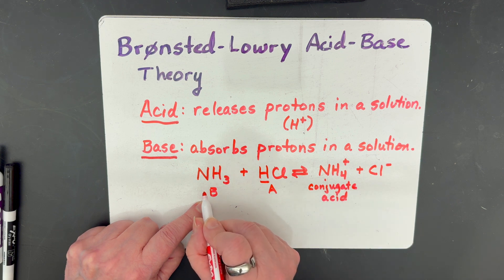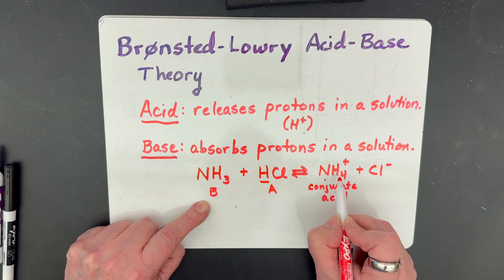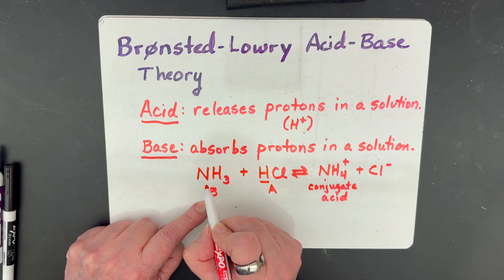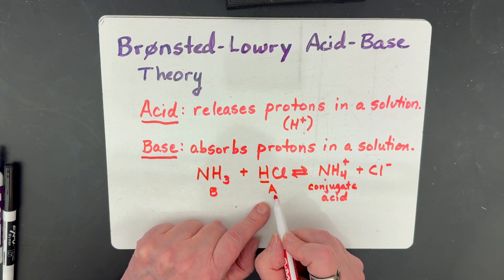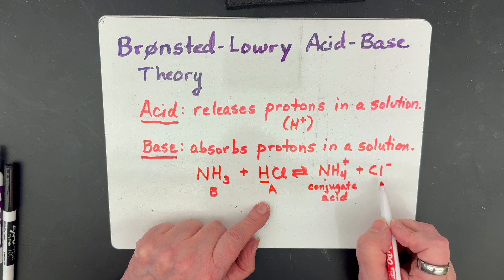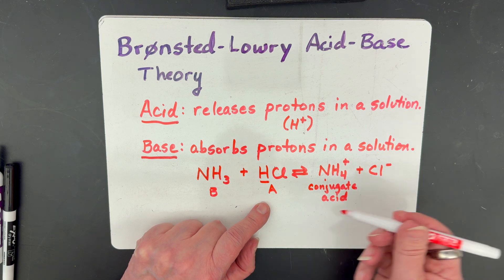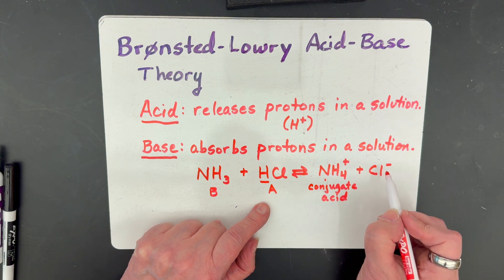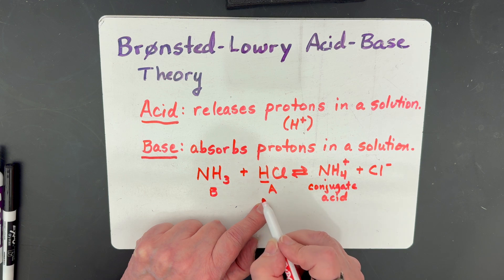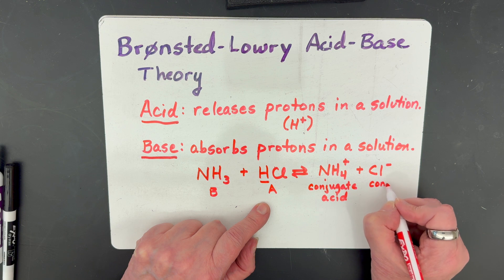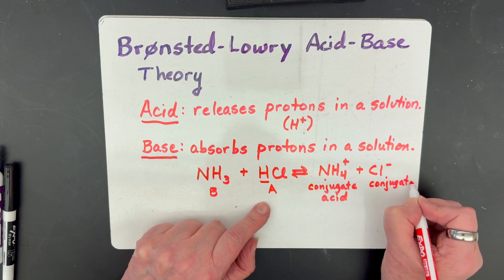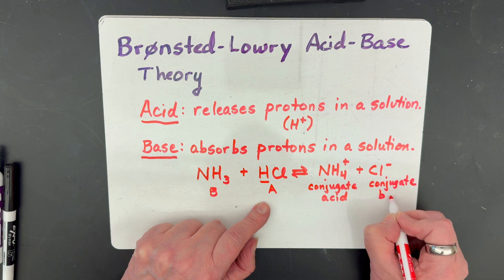Notice the base becomes the conjugate acid. If you gain a hydrogen going this way, you have to lose a hydrogen to get back. And our acid, HCl, lost its hydrogen to become Cl. But in the reverse direction, it has to go from Cl to HCl. It has to grab a hydrogen, gain a hydrogen. So that is called a conjugate base, because something that gains hydrogens is a base.